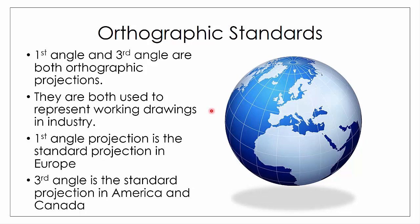Historically speaking, first angle was the original projection system. It was devised by a Frenchman called Gaspard Monge, and when he devised orthographic projection he devised it as first angle projection. It wasn't until around World War One in America, where many manufacturing companies began using third angle projection, that it caught on and became their standard projection system. Often it depends on whether your company works predominantly with European or American companies, which determines which standard you'll see on a day-to-day basis.